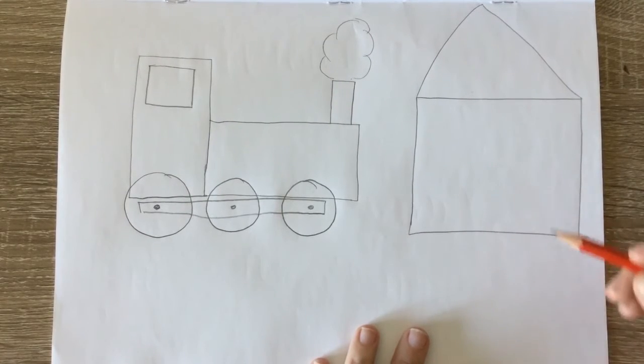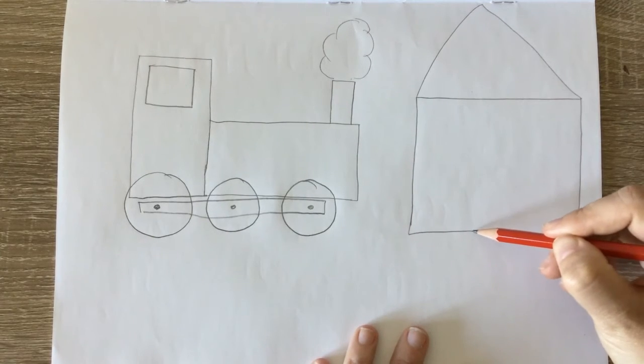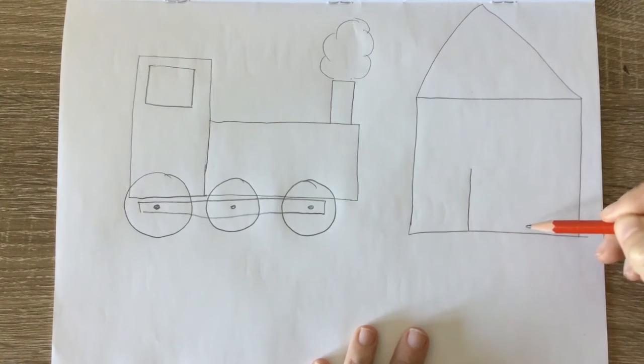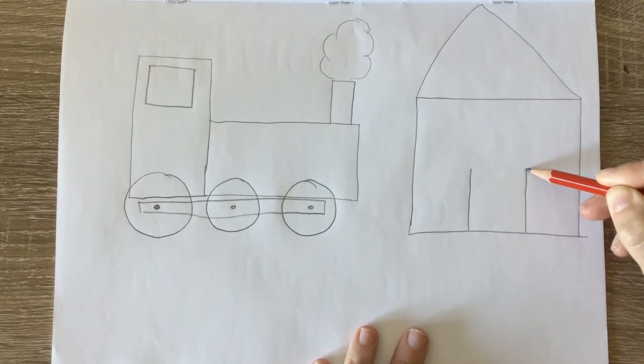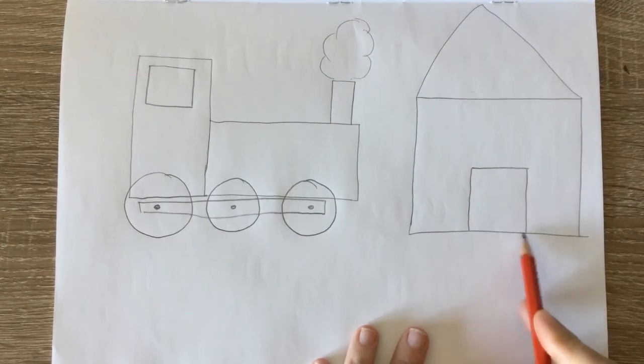I'm going to draw my door which I'm going to use the shape of a rectangle. Remember I need two long sides and two short sides. So one and two.